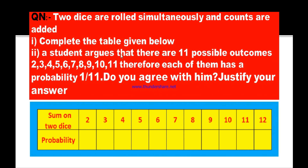A student argues that there are 11 possible outcomes: 2, 3, 4, 5, 6, 7, 8, 9, 10, and 11. Therefore, each of them has a probability of 1 by 11. Do you agree with him? Justify your answer.